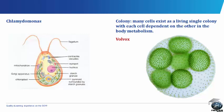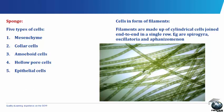For the colony, many cells exist as a single living colony in which each cell is dependent on the others in body metabolism. The sponge has five types of cells: Mesenchyme, Collar cells, Amoeboid cells, Holopore cells, and Epithelial cells.